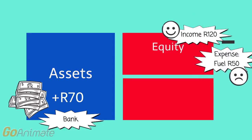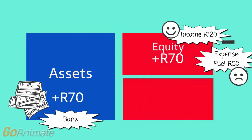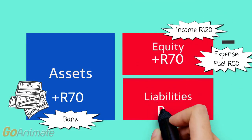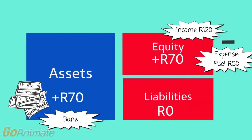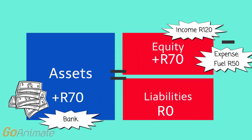So the net effect on equity is that income minus expenses gives her an increase in equity of 70 rand. The effect on liabilities is zero. So we see the increase in her bank balance of 70 rand is equal to the increase in equity of 70 rand.